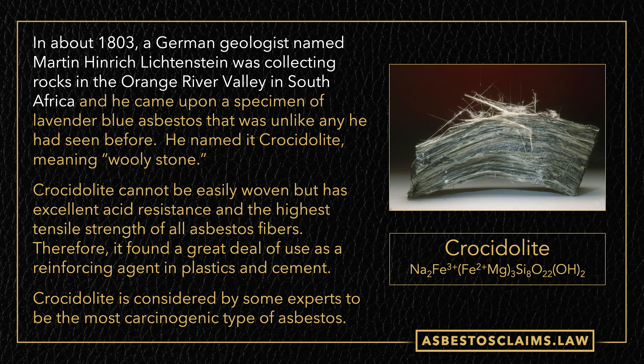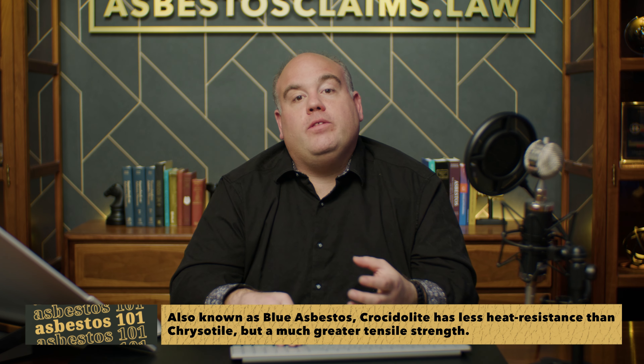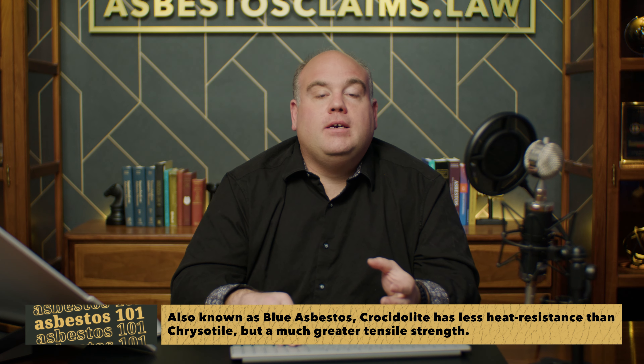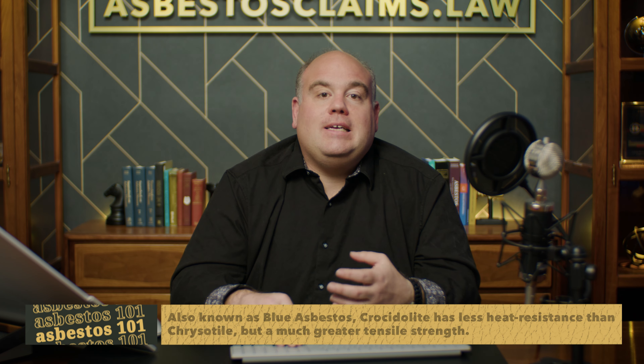The next asbestos mineral is crocidolite. It was discovered in 1803 by geologist Martin Lichtenstein, who named it out of two Greek words meaning woolly stone. He was particularly taken by the lavender-blue color of the sample he found — blue because of its high iron content. Like all members of the amphibole family, crocidolite is less easily woven into cloth like chrysotile, but it does have the highest tensile strength of any type of asbestos. So it was used to reinforce cement, plastic, and things like that, and also in a lot of gaskets, especially those that would come into contact with acid.